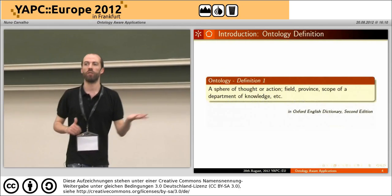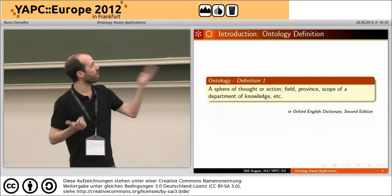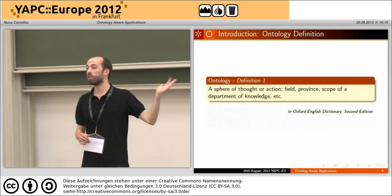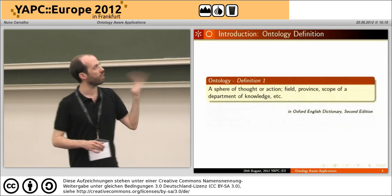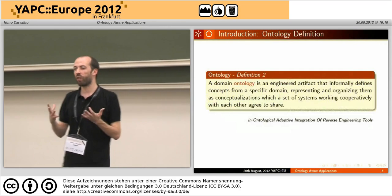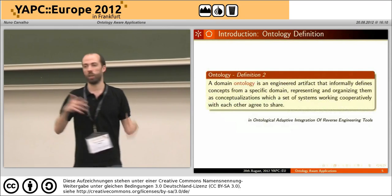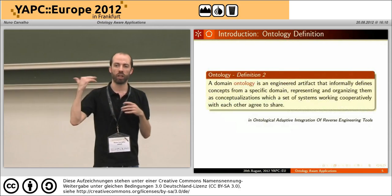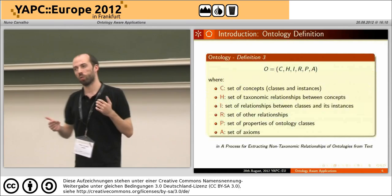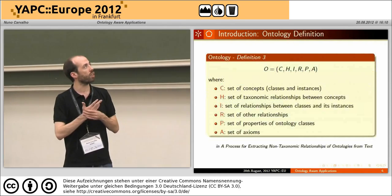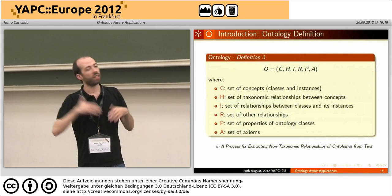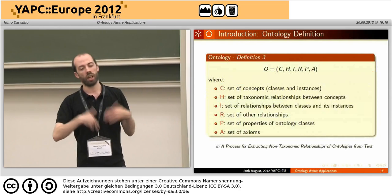To use ontologies, we need to define what an ontology is. We can say an ontology is a sphere of thought — very useful for philosophers — but in computer science this is not enough. We can try to define an ontology as an artifact that specifies a reality or a specific domain by specifying concepts that exist in that domain and the relations between those concepts. If we want to formalize further, an ontology needs to have concepts, a set of relations between concepts, instances of concepts, and so on.